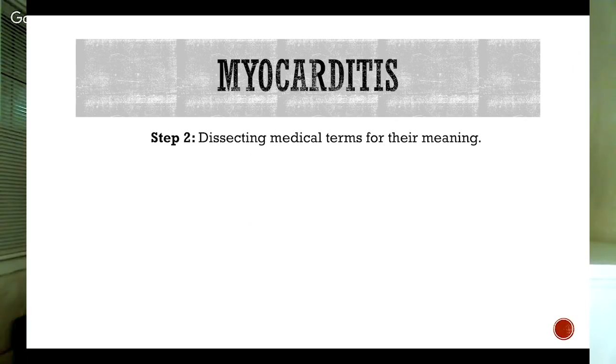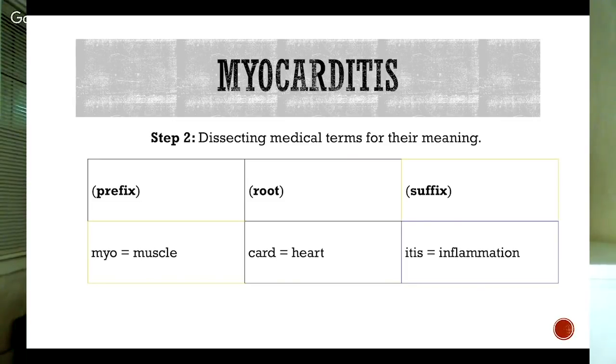Let's take myocarditis as an example — there are three parts to this word. This leads us to step two: dissecting medical terms for their meaning. The way you dissect a medical term is by identifying the prefix, the root, and the suffix. For myocarditis, the prefix is myo, the root is card, and the suffix is itis. One of the ways to guarantee you'll pass your medical terminology exam is by spending time learning frequently used prefixes, roots, and suffixes used to make medical terms. Memorizing which category each part belongs to is unnecessary — you just need to know what it means.